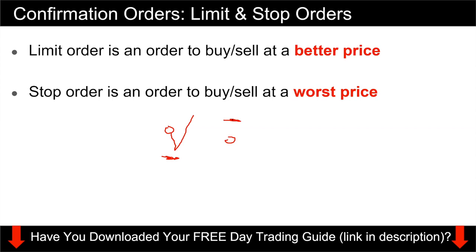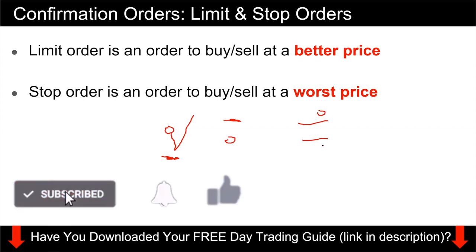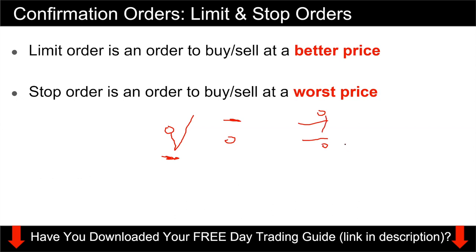The stop order is just the opposite — it's an order to buy or sell at a worse price. You might ask why would you want to buy at a worse price. In cases where you are doing breakout trading, let's say this is the range and you only want to buy when price breaks out, you can place a buy stop order above or a sell stop order below. When price breaks out, your order will be triggered. If you place a buy stop and price doesn't go up but drops down instead, your trade wouldn't have been triggered, so you wouldn't have lost money. It doesn't guarantee execution, but it might save you money if price doesn't trigger your order.